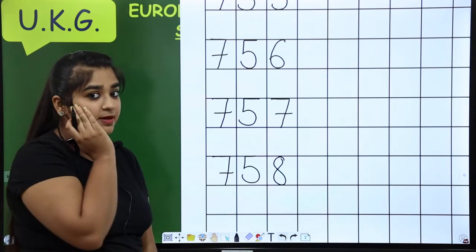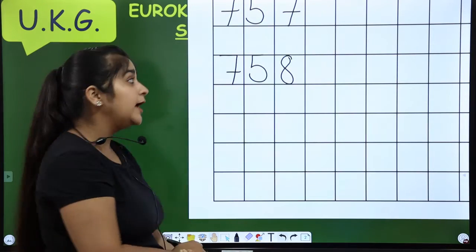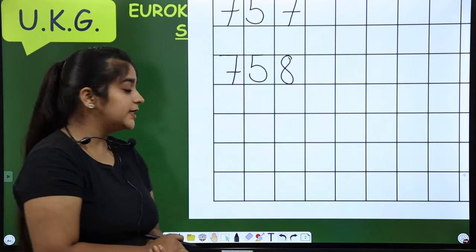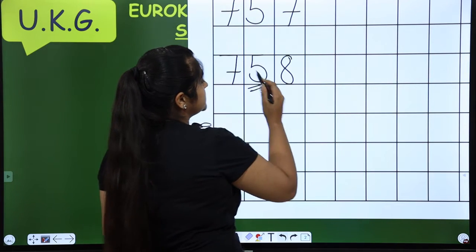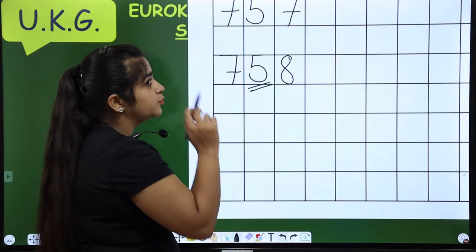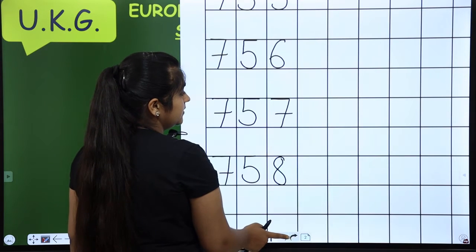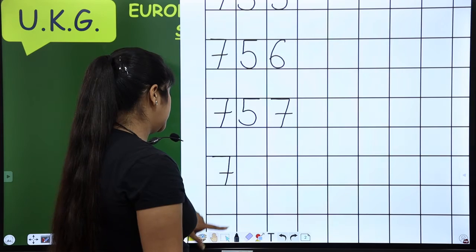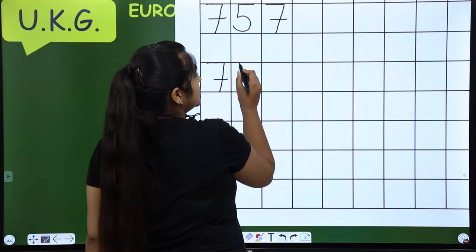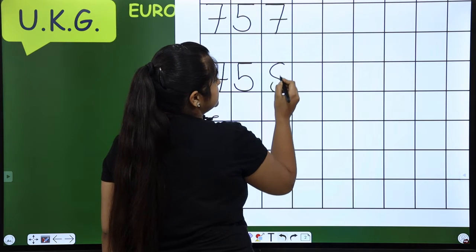Ho, ma'am, aap ne galti kardhi? Yes, ma'am na galti kari hai. Ma'am na kya mistake kari hai? Ma'am na ye mistake kari hai. Ma'am na poora line se touch nahhin kara, but aap ko ye mistake nahi karni hai. Ab ma'am na dobarha se likhenge.